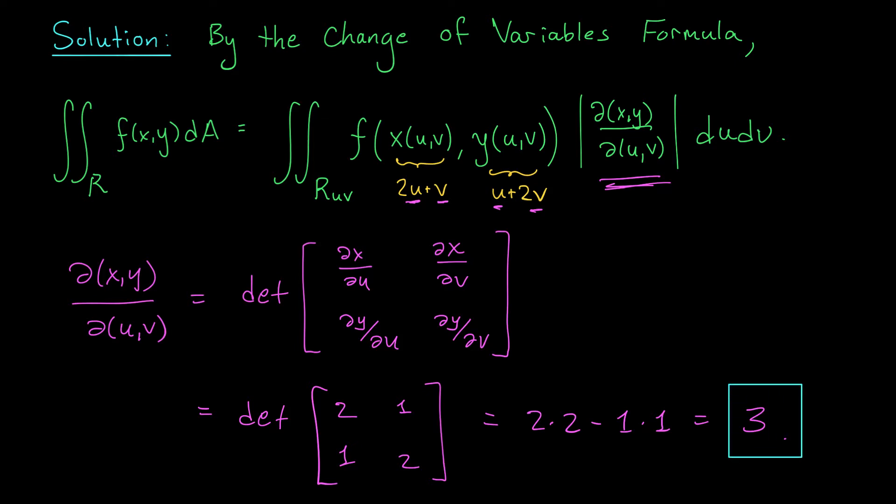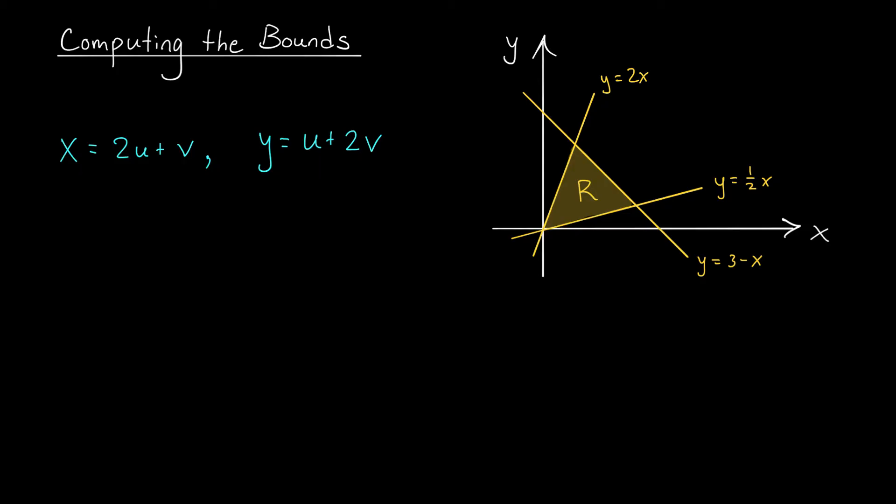Next we need to see what our region R looks like in the uv plane after we make this type of transformation. If we can find out our region we'll be able to determine the bounds on our integral. As a reminder, in this question we're integrating over the region R bounded between the lines y = 2x, y = 1/2 x, and y = 3 - x. I've plotted that triangular region for you here and now you can see why we're doing this change of variables.